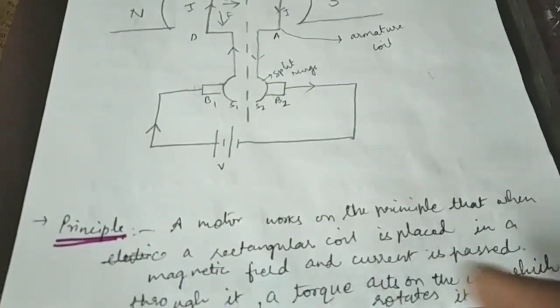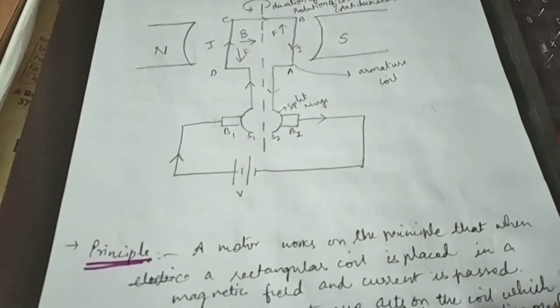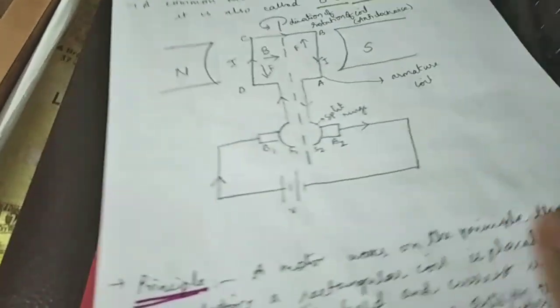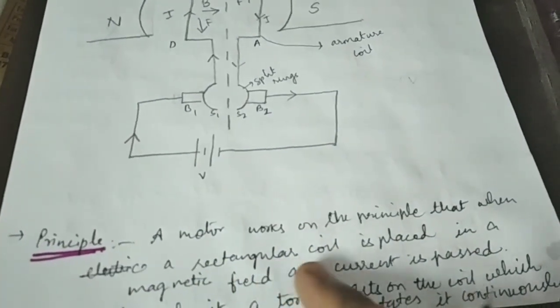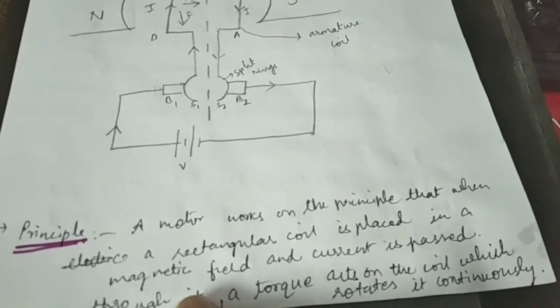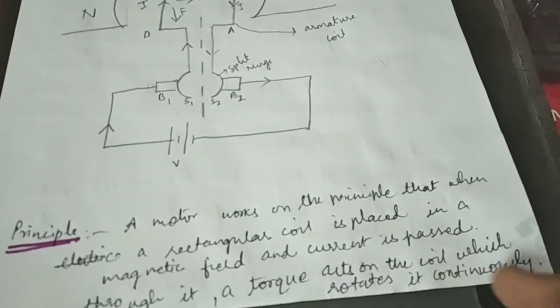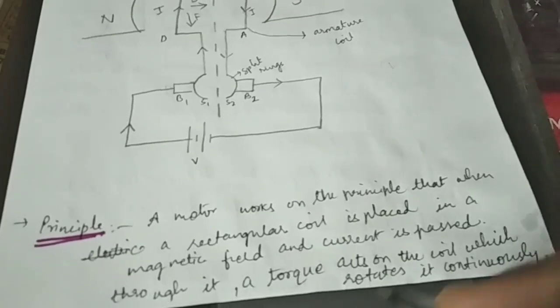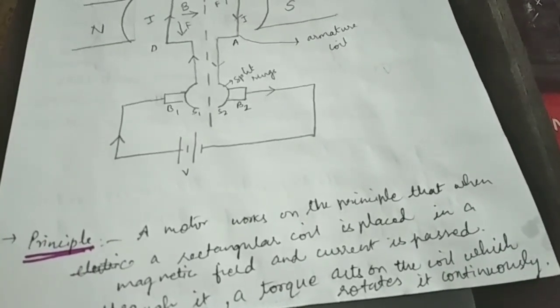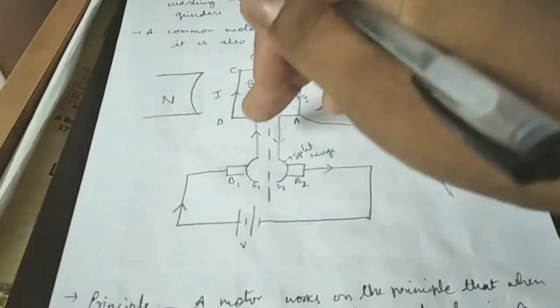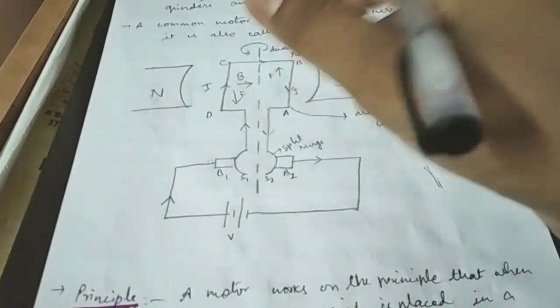To attempt this four-mark question you need to write the principle, its construction, and its working. A motor works on the principle that when an electrical rectangular coil is placed in a magnetic field and current is passed through it, a torque acts on the coil which rotates it continuously. Torque is the force which rotates something.